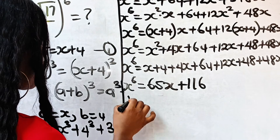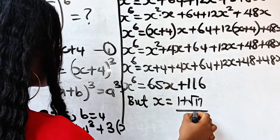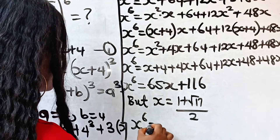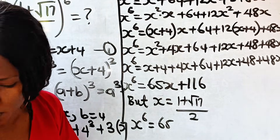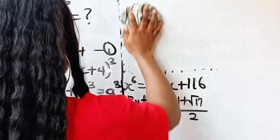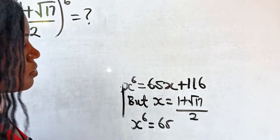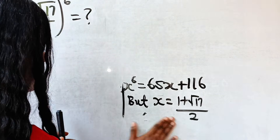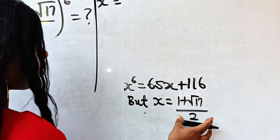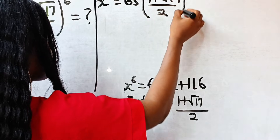Now, remember we said x = (1 + √17) / 2. So we can write x⁶ = 65 times (1 + √17)/2 plus 116. Opening this bracket: 65 times 1 is 65, and 65 times √17 is 65√17, so we have (65 + 65√17)/2 plus 116 over 1.